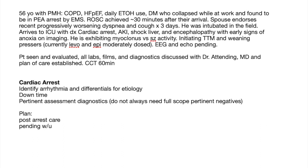Alright, so here we have our scenario, which is completely fabricated. This is a 56-year-old with extensive pulmonary history. He collapsed at work — PEA arrest. You don't always have that identified early on. We don't get EMS trip sheets anymore, so that's really a bummer. But in this scenario, we do know it's PEA. We know the ROSC was 30 minutes, and we know the story is that he's had worsening dyspnea and cough, which further lends credit to the theory that this is a respiratory-to-cardiac arrest.